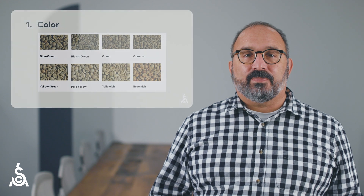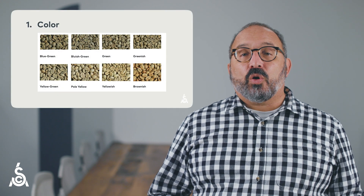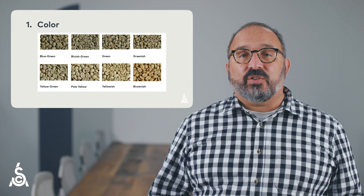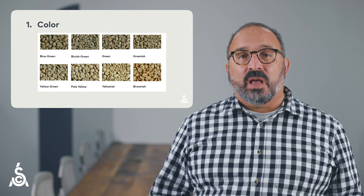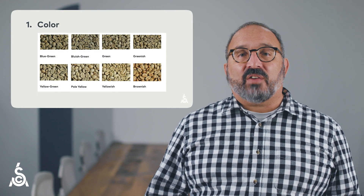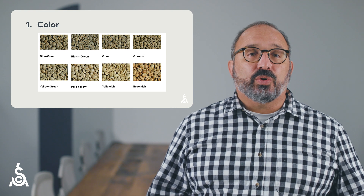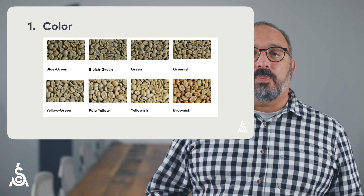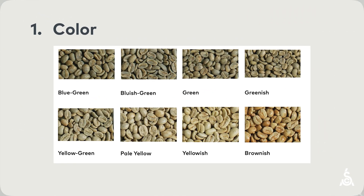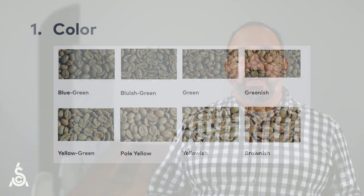First, color. According to the SCA Grading Handbook, unroasted coffee's color ranges from a blue-green to a pale-yellow, depending on origin, processing, or age. Color should be noted by the grader, although there are no prescriptive norms for coffee color.